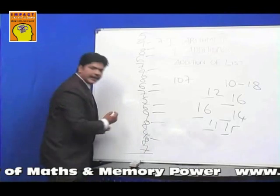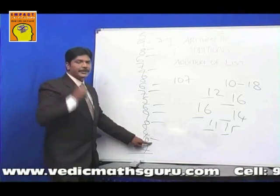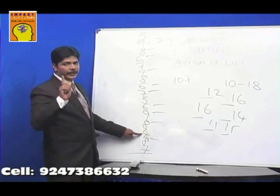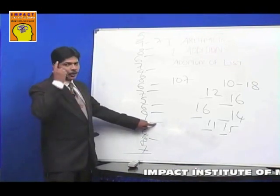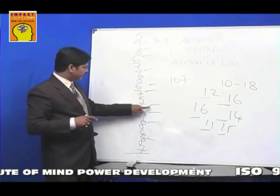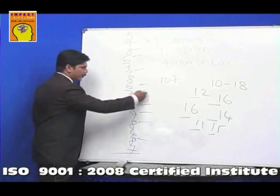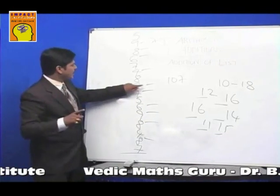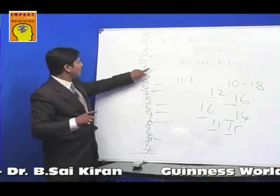Start from the bottom. 7 plus 8 is 15, so put a dash before 8 and hold 5 in your mind. Add 5 to the next number: 5 plus 4 is 9. Don't put a dash for 9 — only put a dash for 10 and above. So 9 plus 8 is 17, put a dash, hold 7 in mind. 7 plus 9 is 16, put a dash, hold 6. 6 plus 6 is 12, put a dash, hold 2. 2 plus 5 is 7, 7 plus 7 is 14, put a dash, hold 4. 4 plus 6 is 10 — when you get 10, just put a dash and carry nothing.